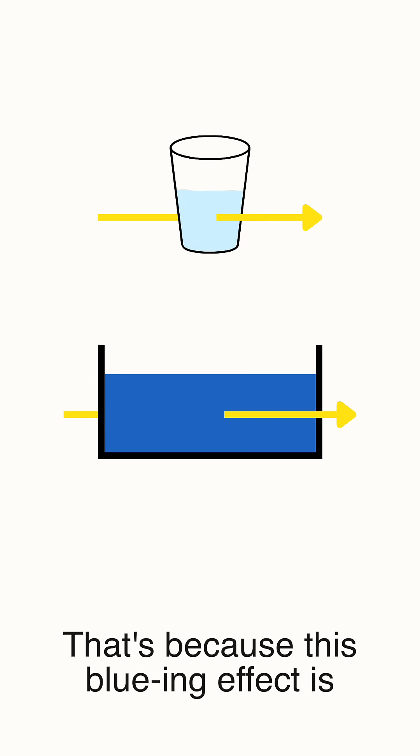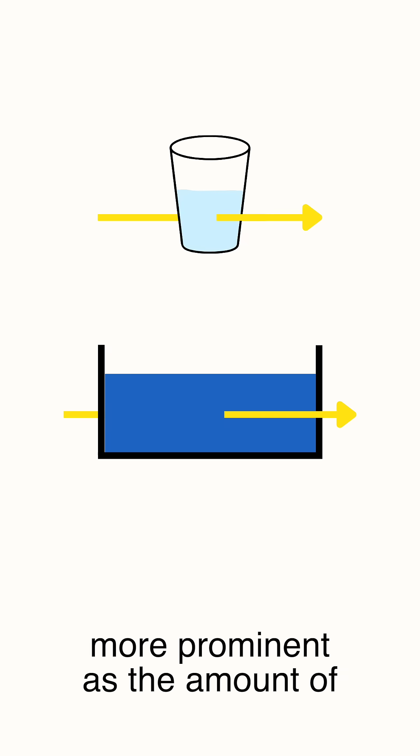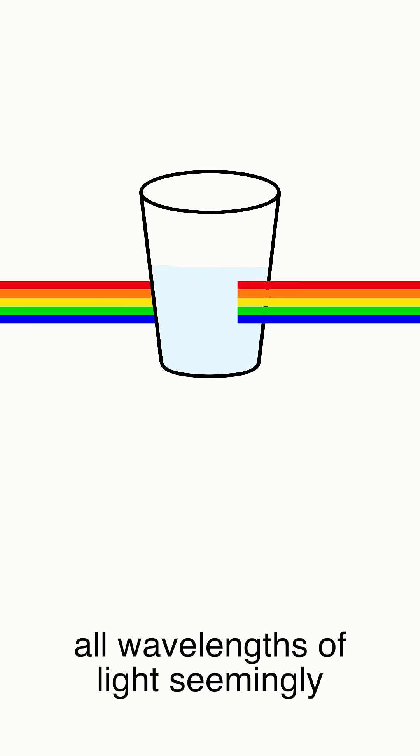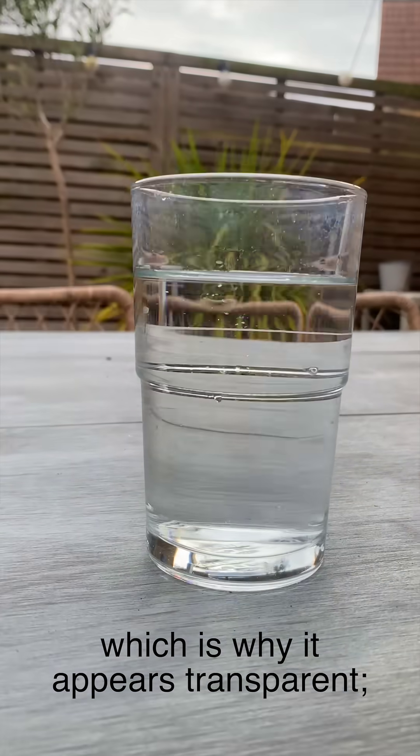So why isn't this glass of water blue? That's because this bluing effect is more prominent as the amount of water light needs to pass through increases. So with a small glass of water, all wavelengths of light seemingly pass through the glass equally, which is why it appears transparent.